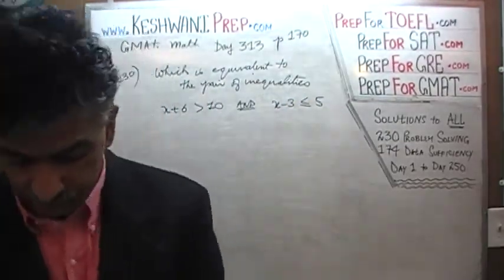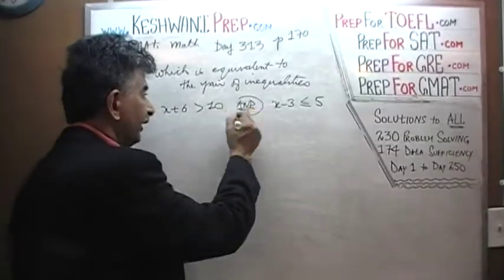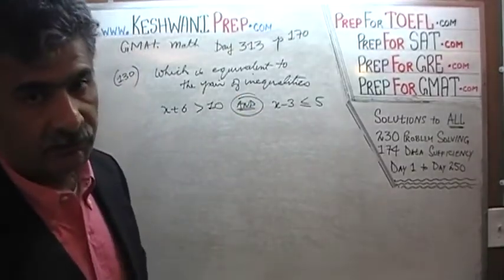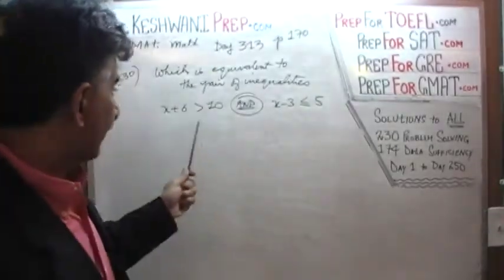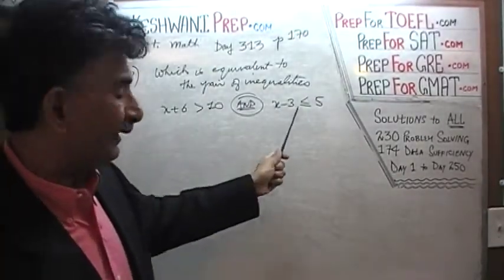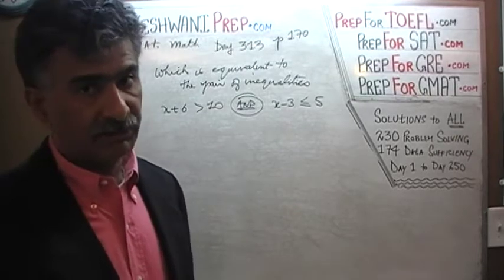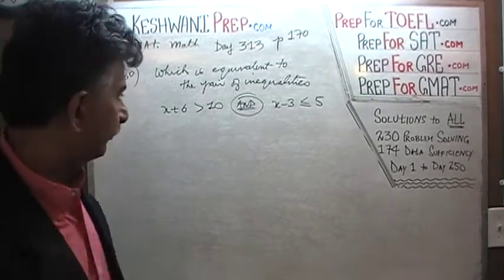What we need to understand here is that because of the fact they use the word 'and', that means the value of x, whichever value of x that we are going to claim, has to satisfy this inequality and this inequality simultaneously at the same time. Alright, so let's find out what's going on.